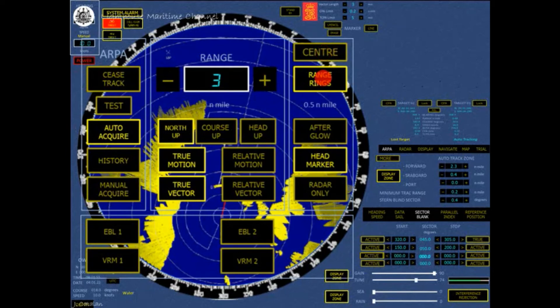Switches the range rings on the PPI on or off. The distance between the rings is shown below the button when the button is activated. The range rings will change automatically according to the PPI range changes.